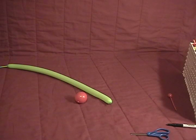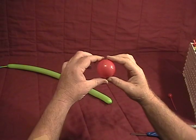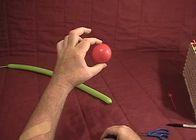For our frog we'll be using two balloons. We've got a red five inch round, inflated to about an inch and a half or so, about the size of a ping pong ball.